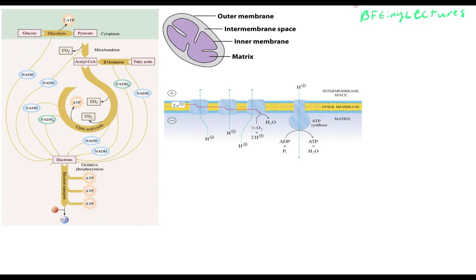Today we will be talking about the electron transport chain and oxidative phosphorylation. Everything we learned so far has led to the electron transport chain. In the last video we were talking about the TCA cycle, and the whole purpose of the TCA cycle was to create coenzymes — reducing NAD+ and FAD to create NADH and FADH2.